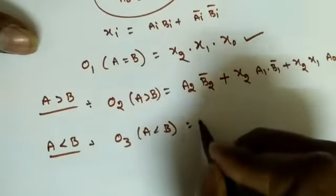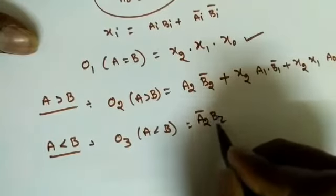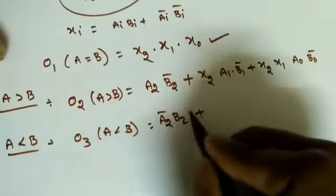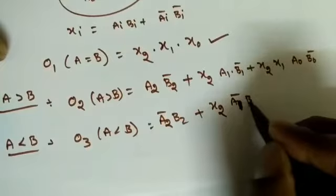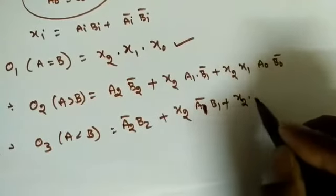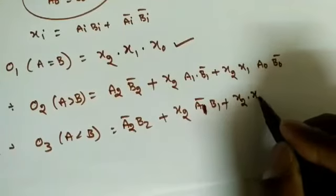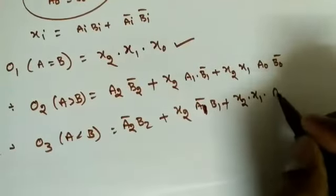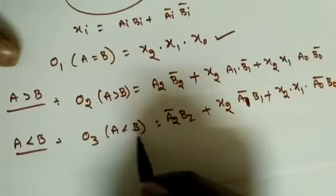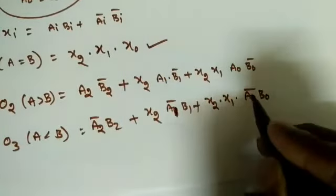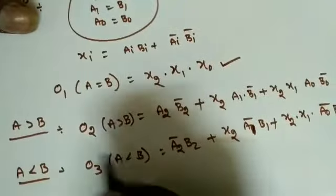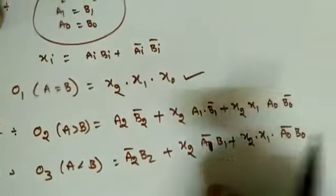For A less than B (O3), similarly: A2_bar·B2 + X2·A1_bar·B1 + X2·X1·A0_bar·B0. Here B's bits are uncomplemented and A's bits are complemented, since B is greater. This is the logic expression for all three outputs of the three-bit magnitude comparator.